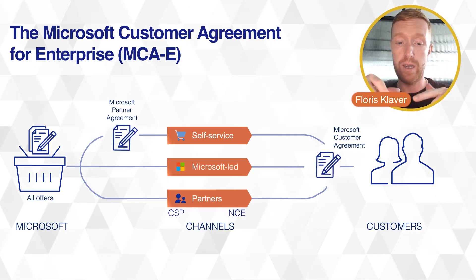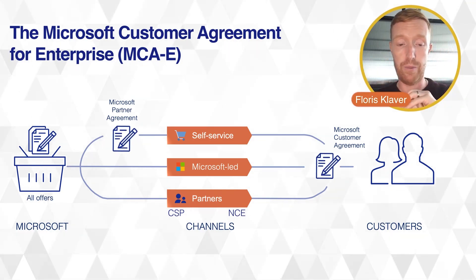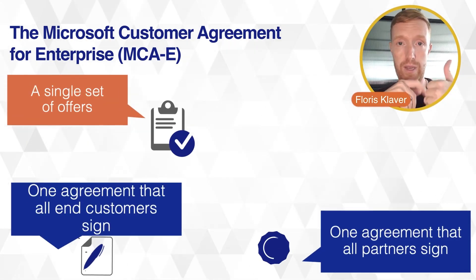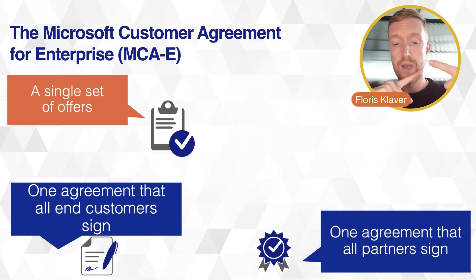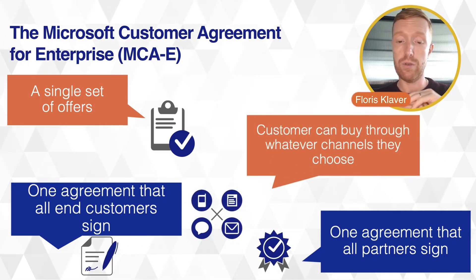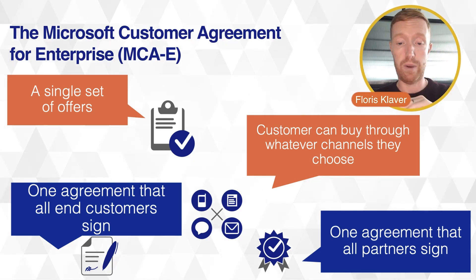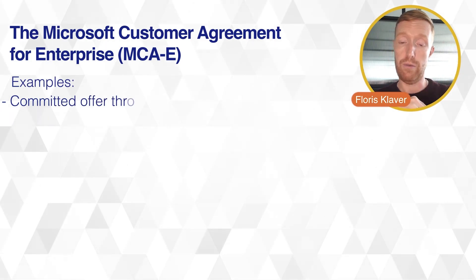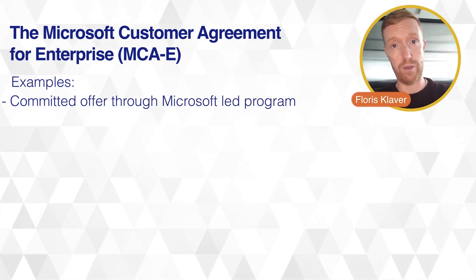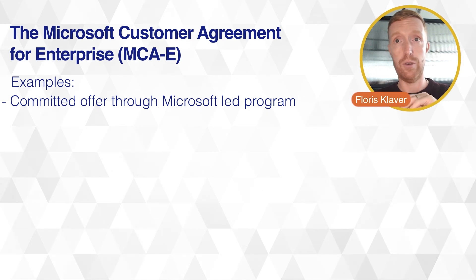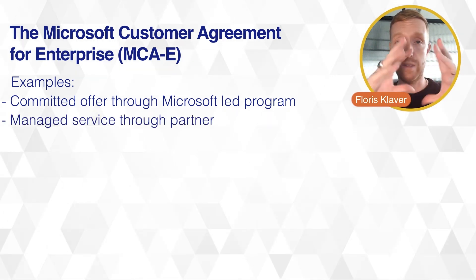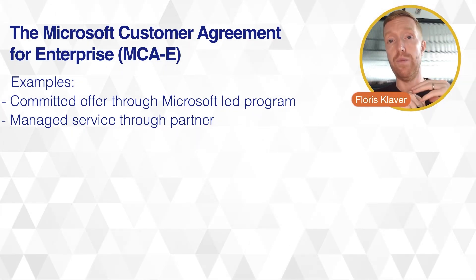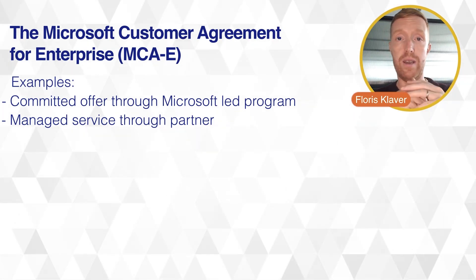The Microsoft Customer Agreement makes this all possible. You as an end customer decide where and how you want to buy. It gives you a single set of offers and one agreement that all end customers and partners sign. Customers can buy through whatever channel they choose — even different products can be split across different channels. For example, committed offers through the Microsoft lab program, while certain items go through a partner who builds a managed service around them. That's all possible, and the agreement is designed to be easy to sign, read, and set up.